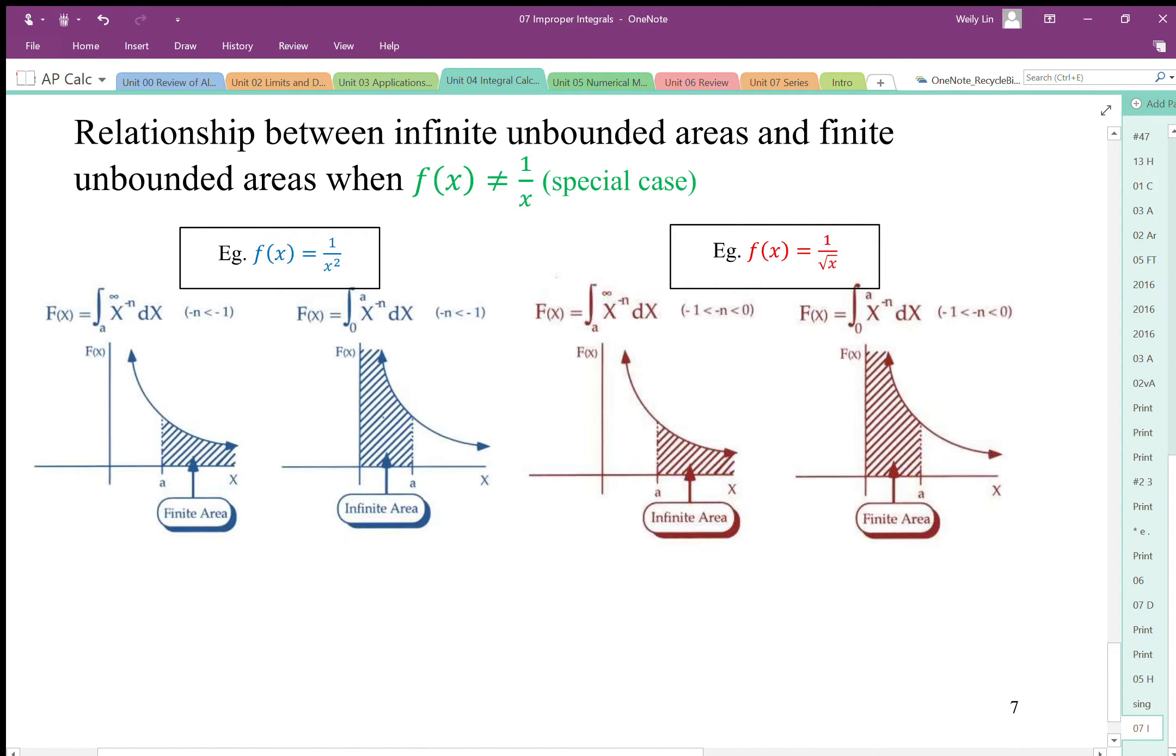Now the converse then is true when we look at the other side of that arbitrary point. So if it's finite on one side, this area against the asymptote then is infinite.